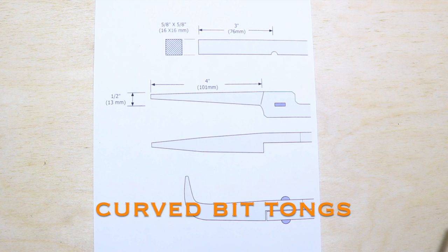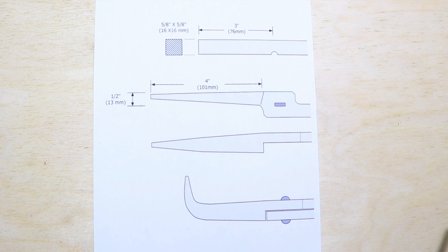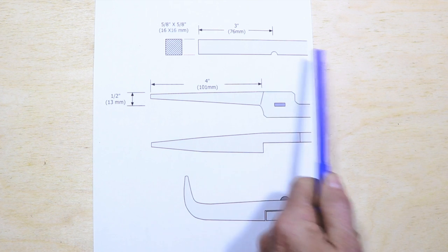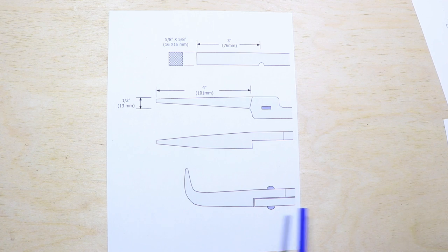Curved bit tongs are usually used for handling hot work, and I quite often call them pickup tongs because they're great for getting small pieces out of the fire and that sort of thing. They're generally not used for forging. They have long slender jaws, so I'm starting off with a three inch offset here.